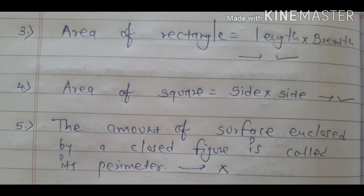Next, okay, jo amount hai surface ka and jo enclosed by closed figure hai that is called perimeter. No, this statement is false. Okay, that is called its area. Usko hum kya kahte hain uska area.